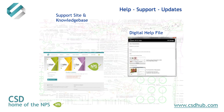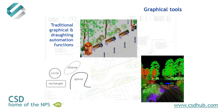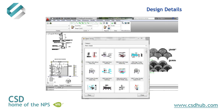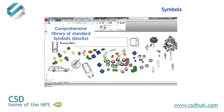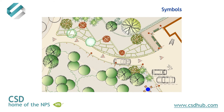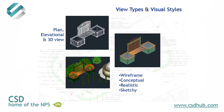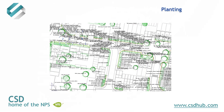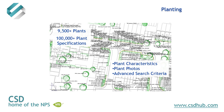Primary support is via the CS Artisan knowledge base. CS Artisan includes traditional graphical and viewing tools. Standard design details are available and users can easily add their own organisation details to the system. Symbols are available in plan, elevation, and 3D view, and numerous visual styles are available. CS Artisan contains in excess of 9,500 plant species and varieties with planting specifications in accordance with the UK National Plant Specification and the Flora product data templates for BIM compliance.